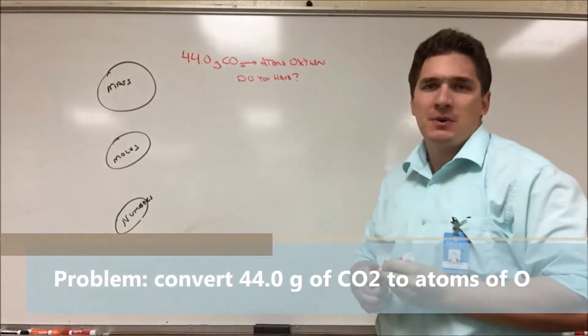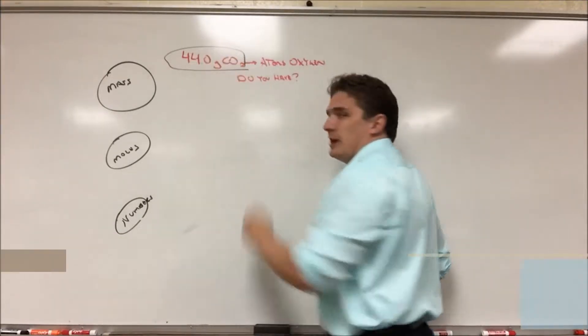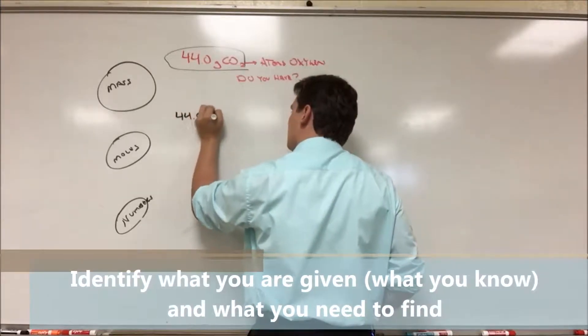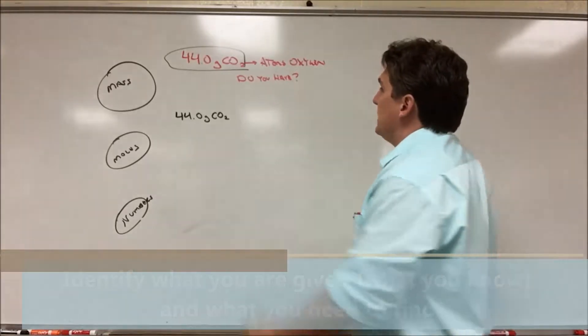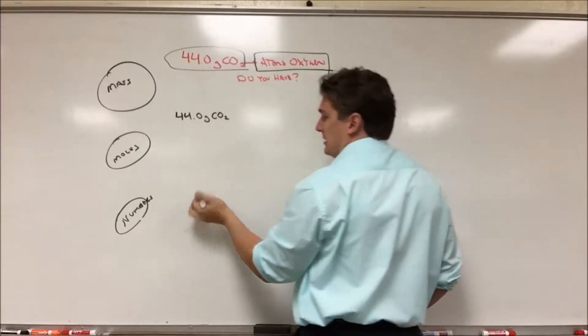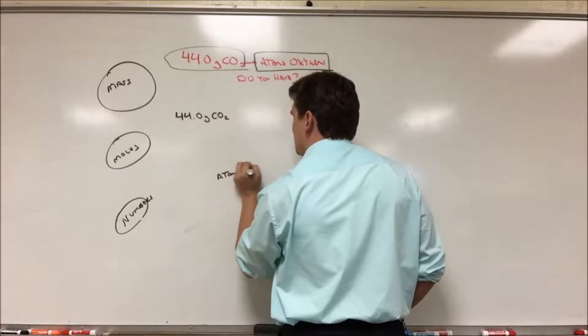So with all these problems, you need to start with what you know. You have 44 grams of CO2. Now figure out what you want to find. In this case, it's going to be atoms of oxygen. So somehow we need to take this number and convert it down to atoms of oxygen.